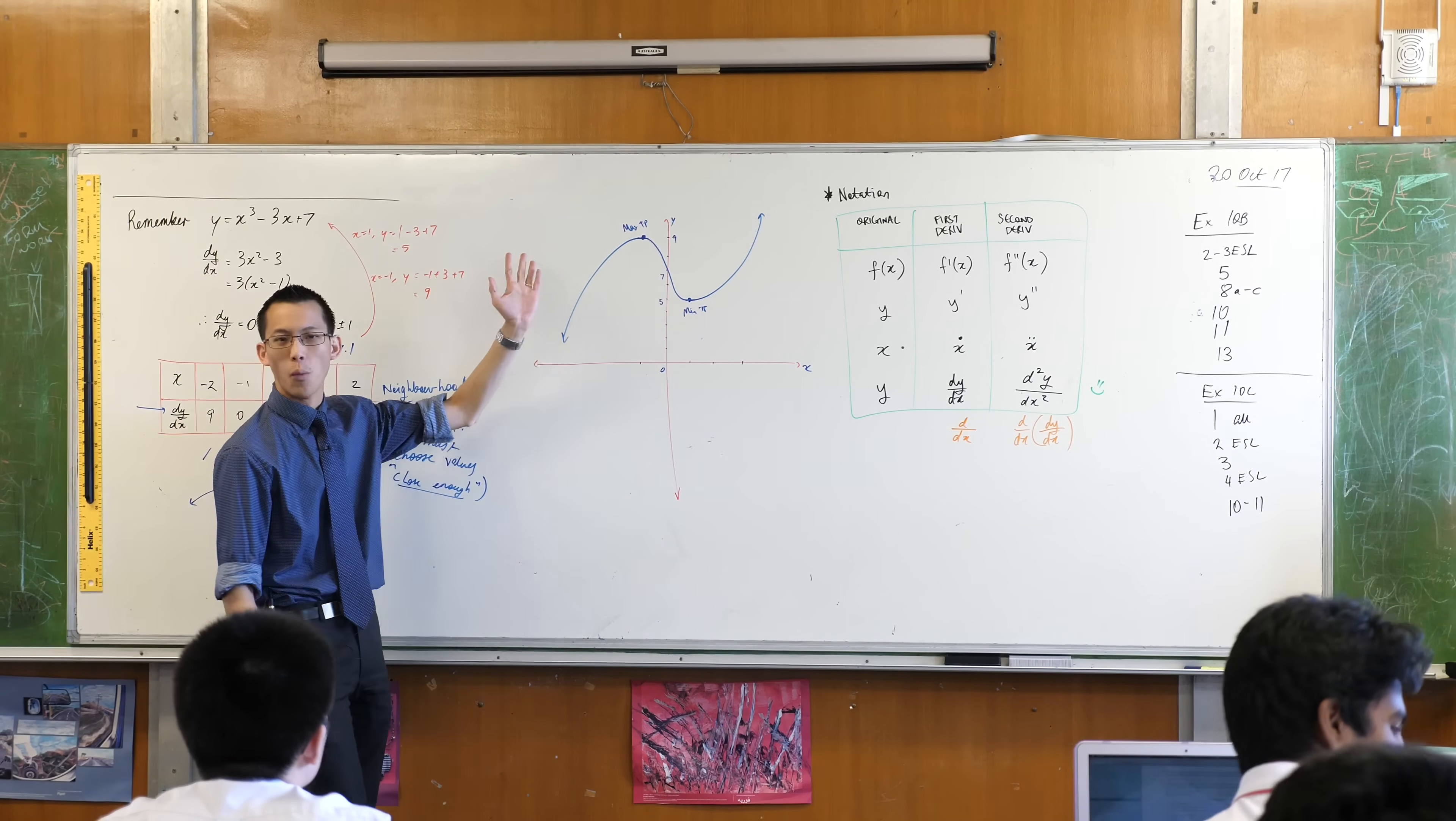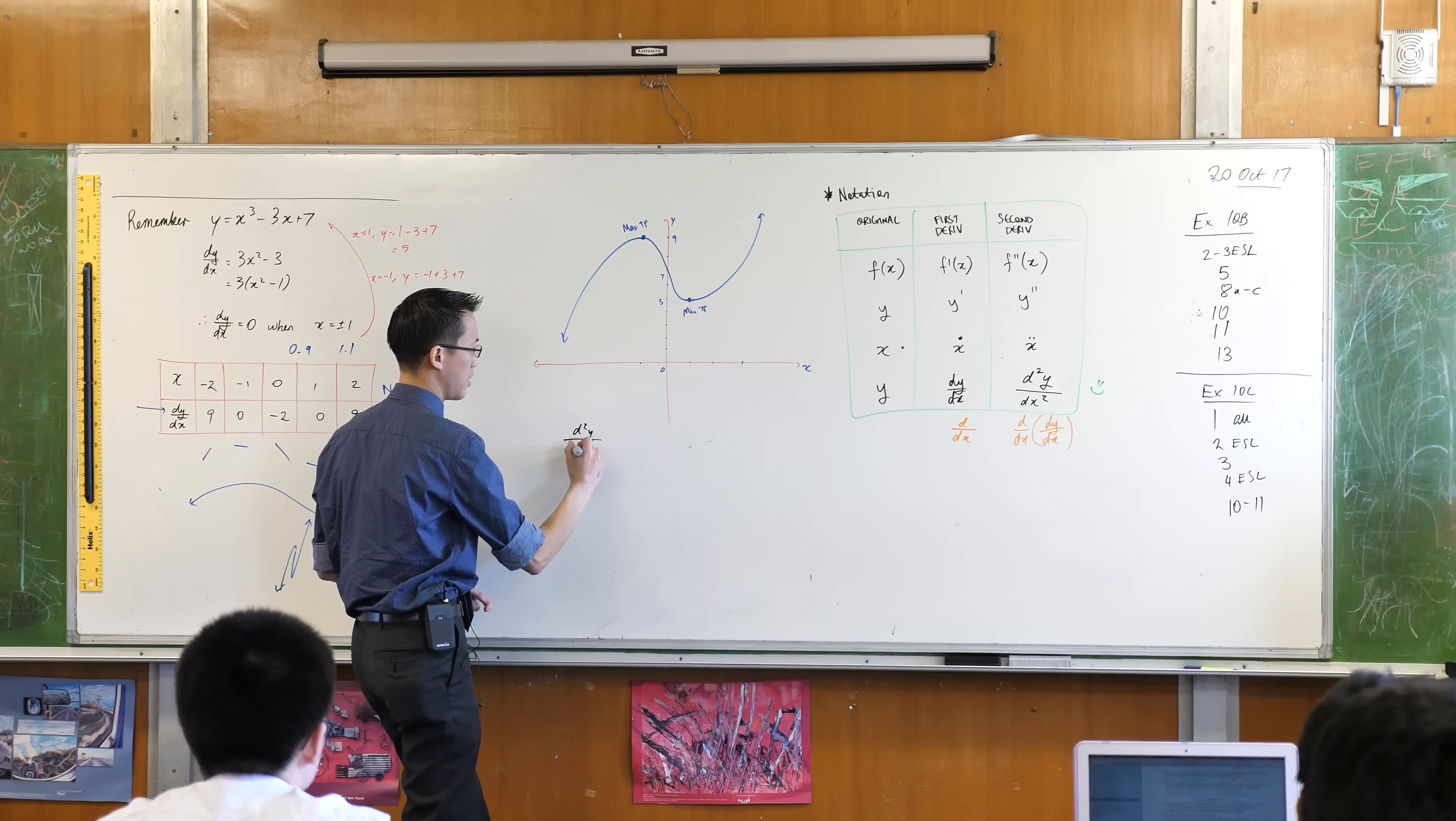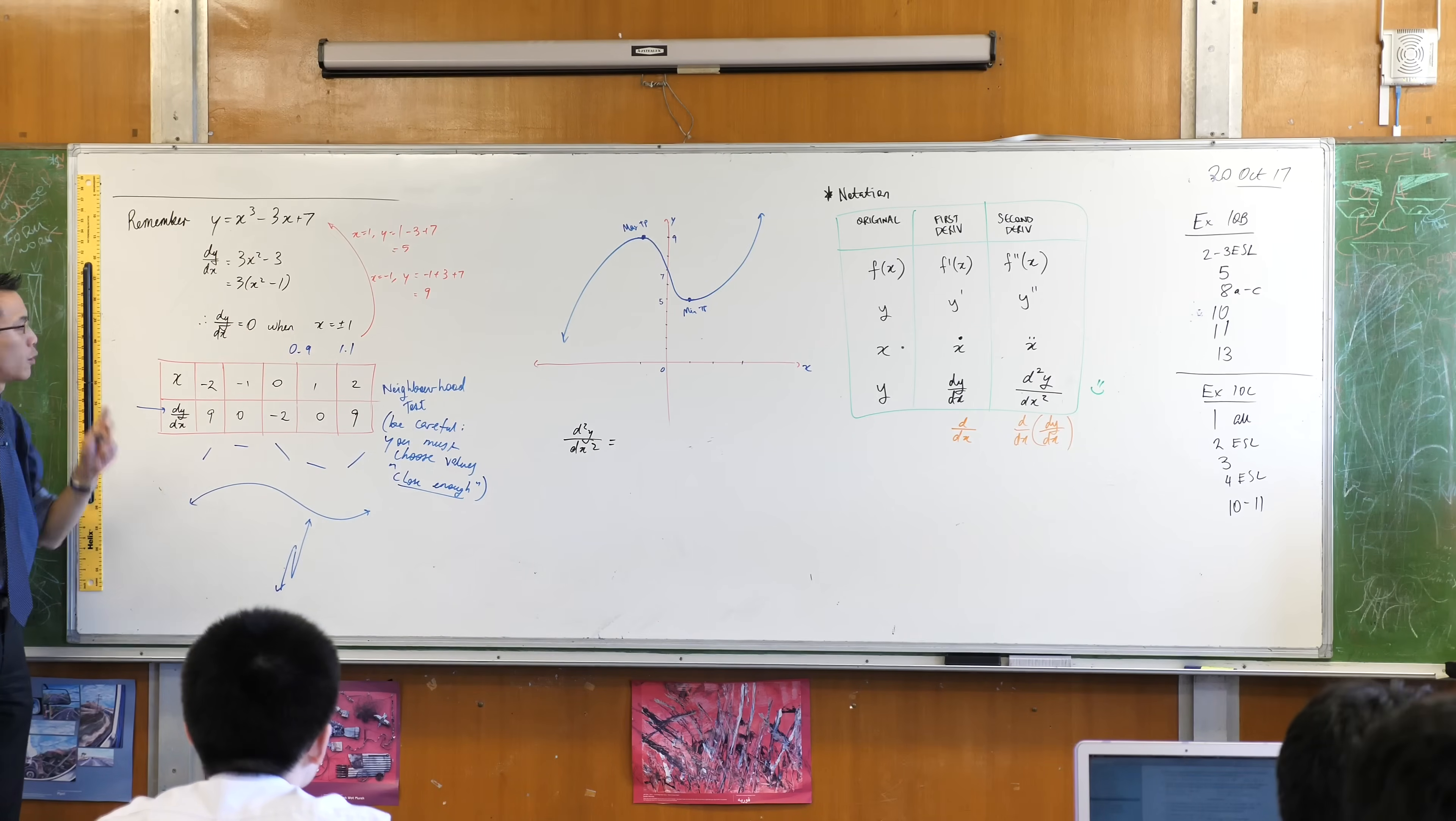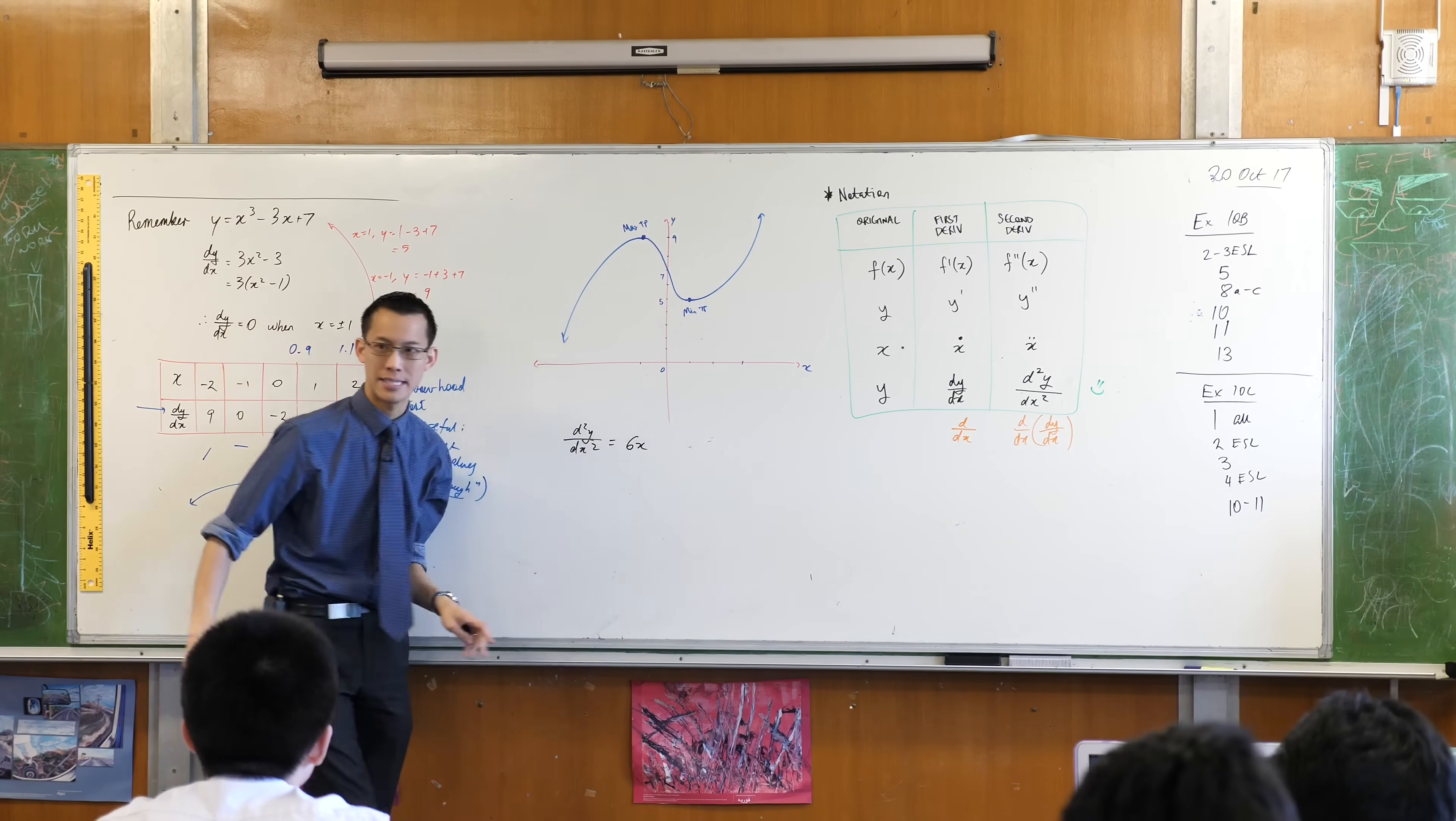You've got the first one here, I need some space. What is the second derivative of this function? Have a look. What do you get? It's a very simple function, have a look. It's just 6x, that's it, okay, 6x.